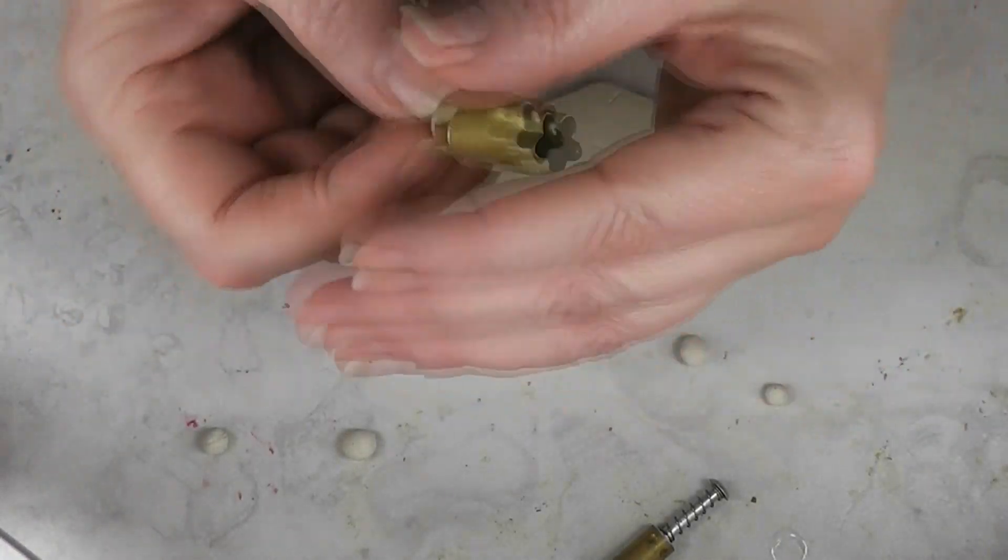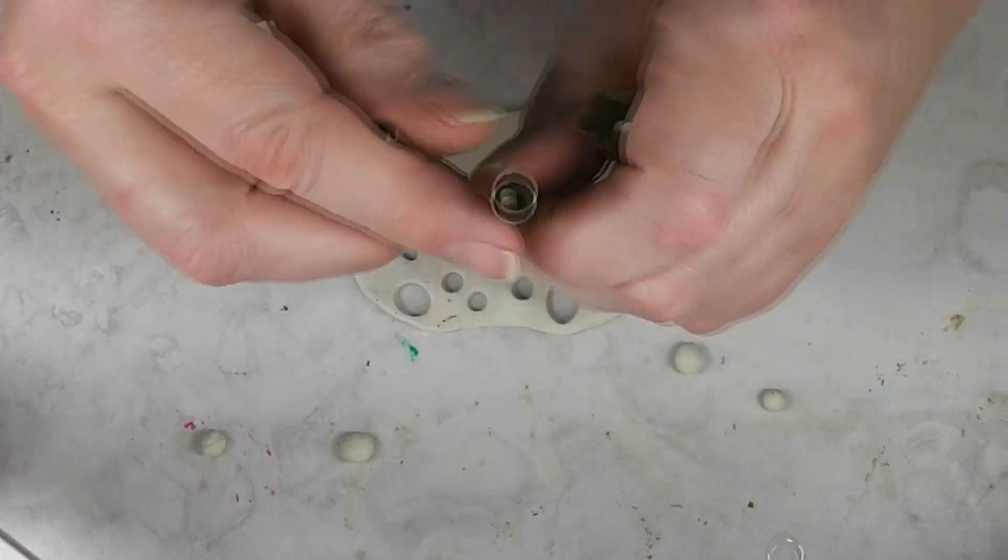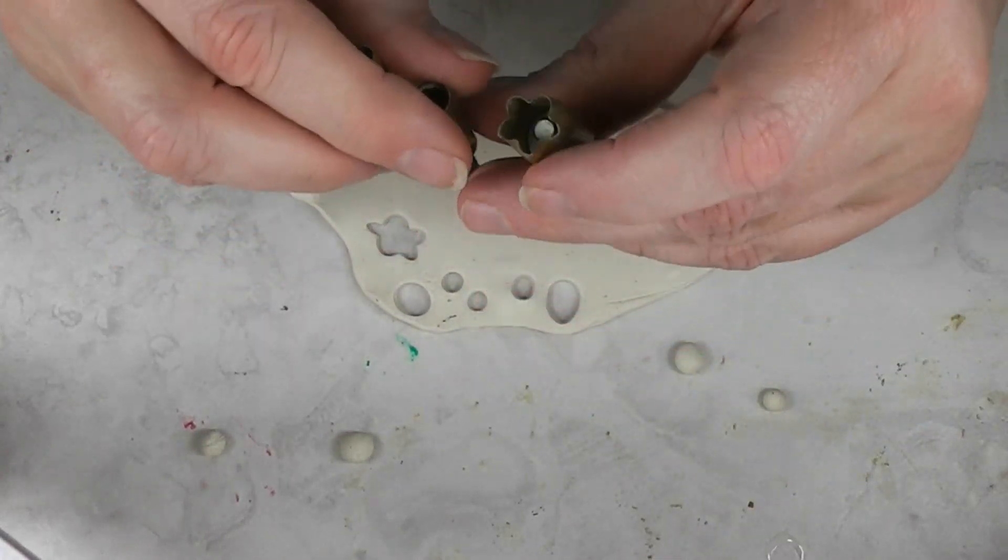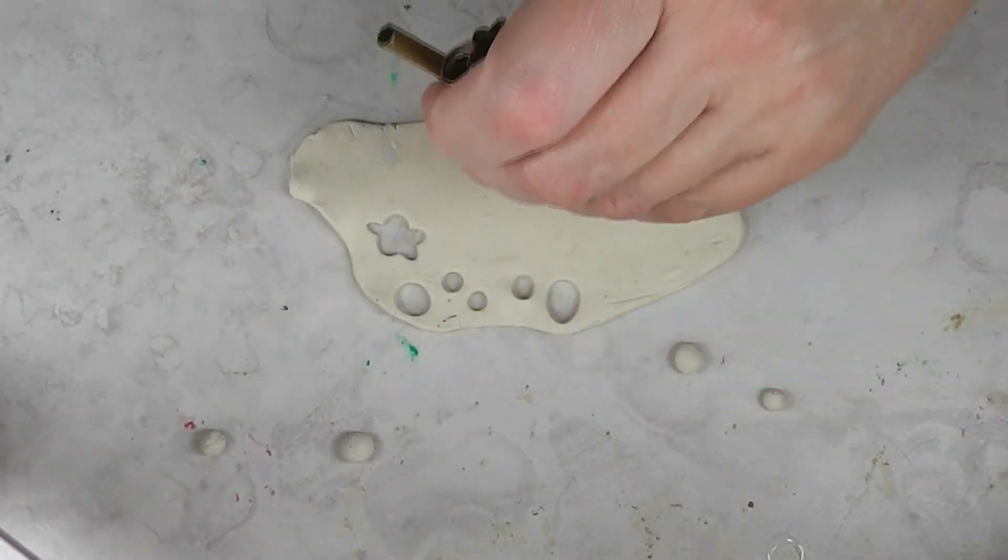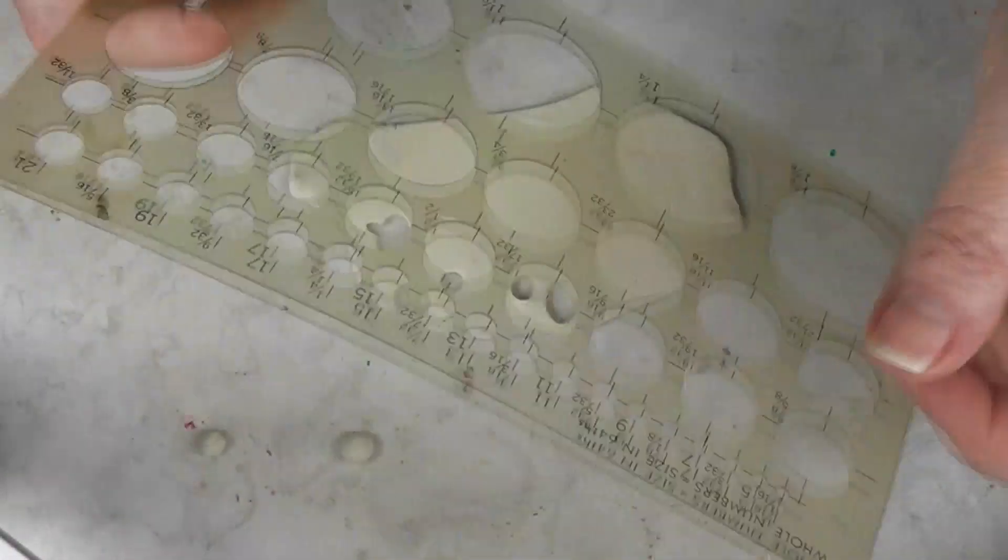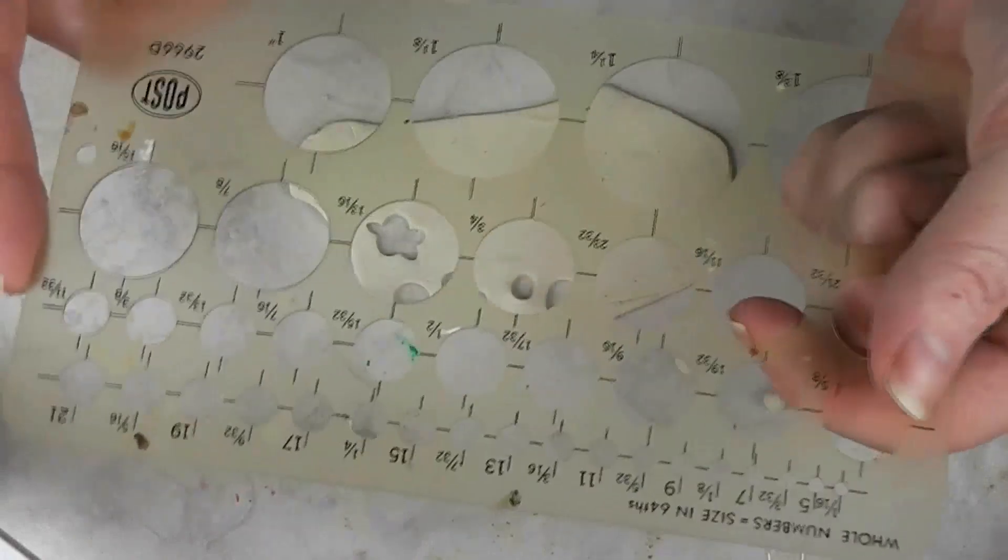That's the beauty of having a collection of these cutters is you use them not only for cutting shapes, but for portioning out your clay. Use that in conjunction with rolling your clay out to an even thickness and then measuring with your circle template.